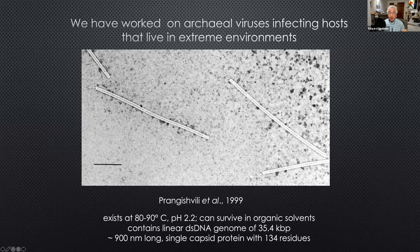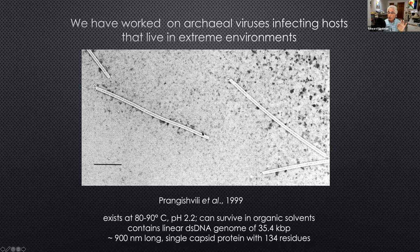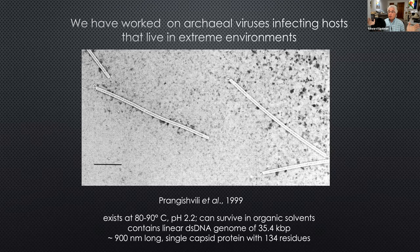If you take these virions and transfer them from 80°C to a minus 80 freezer, leave them for a year, and bring them back to plus 80, their structure has not changed at all and they're equally infective. You can even put them in organic solvents and they'll survive — the DNA will not be damaged. Looking at the rod, avoiding the ends which contain specialized structures, you're looking at thousands of copies of a small 134-residue protein and a linear double-stranded DNA genome of 35 kilobase pairs. The DNA and protein sequences show absolutely nothing unusual compared to any mesophilic virus.